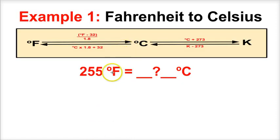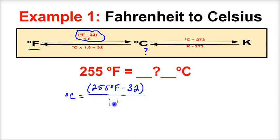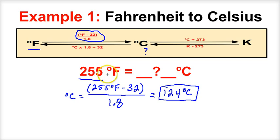In example one, we're asked to determine how many degrees Celsius 255 degrees Fahrenheit is. We know the degrees Fahrenheit, and what we want to figure out is the degrees Celsius. We're going to use the Fahrenheit-to-Celsius formula: take the degrees Fahrenheit, 255, minus 32, then divide by 1.8. When we put this in our calculator, we end up with 124 degrees Celsius. We've got three sig figs here, and this is part of a conversion factor so those are unlimited, meaning our final answer has three significant figures. 255 degrees Fahrenheit is the same thing as 124 degrees Celsius.